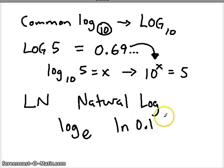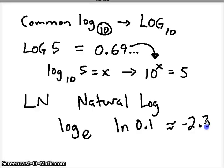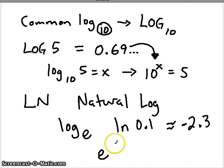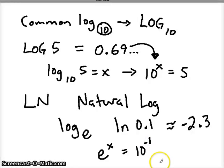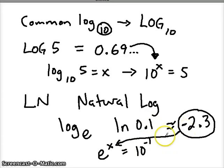Let's try typing in 0.1 on your calculator using the LN button. What you should see is approximately negative 2.3. That seems strange, but let's see why it makes sense. We're talking about log base E of 0.1, which is 1 tenth, or 10 to the negative 1. In order to get a decimal or a fraction we need a negative exponent, so it makes sense that the answer negative 2.3 gives us a decimal. Negative exponents give us fractions or decimals.